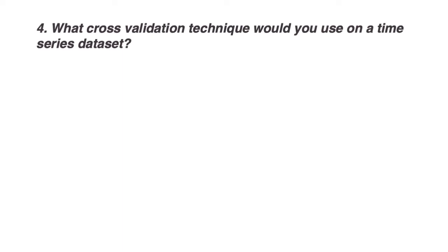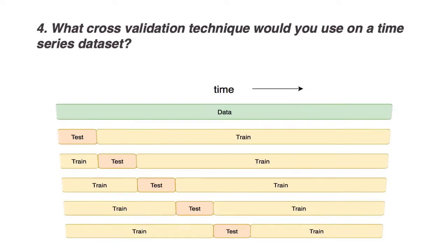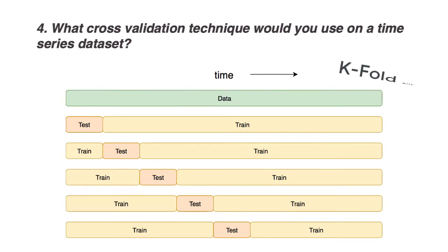What cross-validation technique would you use on a time series dataset? In normal cross-validation, say k-fold, we split the data into k equal-sized chunks. Use k-1 chunks as training and the remaining chunk for testing the model. We can then average the performance of all the k-tests to give some performance measure. A special case when k is equal to n is leave-one-out cross-validation.